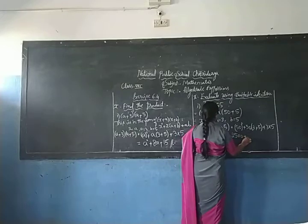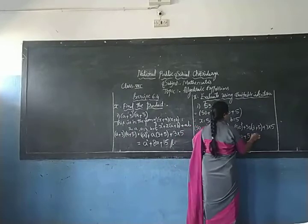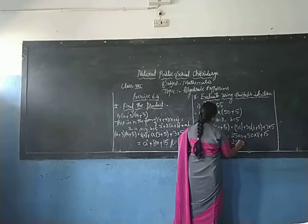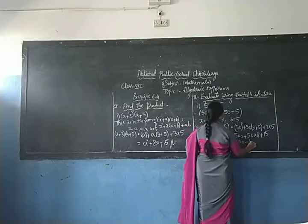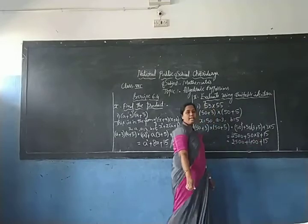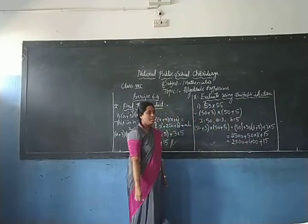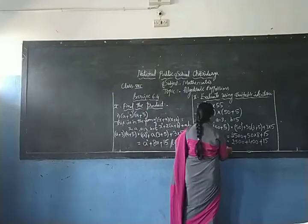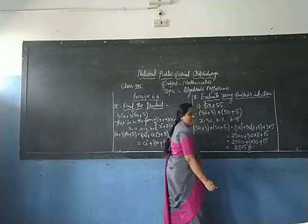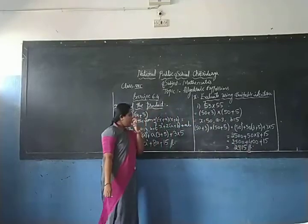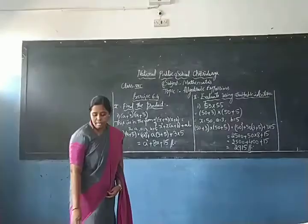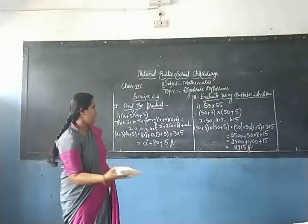We get 50² = 2500, 50×(3+5) = 50×8 = 400, and 3×5 = 15. Adding 2500 + 400 + 15, the final answer is 2915. By using this identity, we can solve such multiplication problems efficiently.